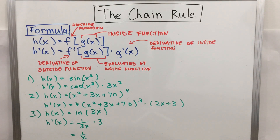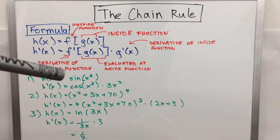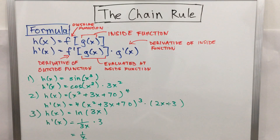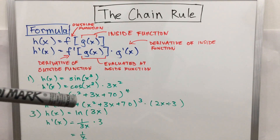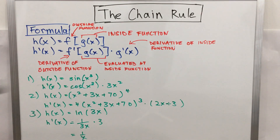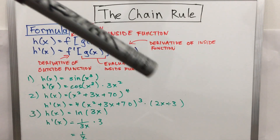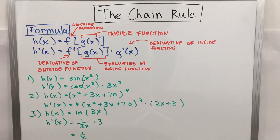In this case, f was that blob to the exponent 4, so you get 4 times blob to the exponent 3. Then you multiply by g'(x), which is the derivative of the inside function g(x) = x² + 3x + 70, giving you 2x + 3.